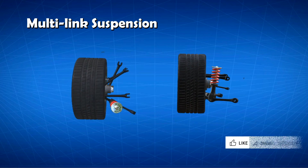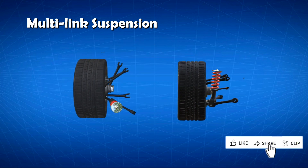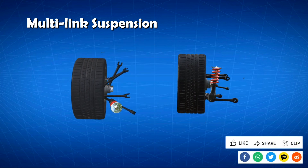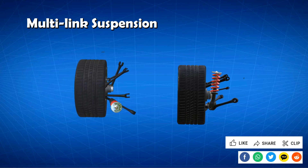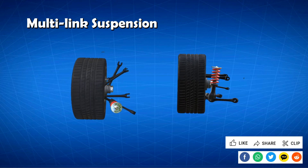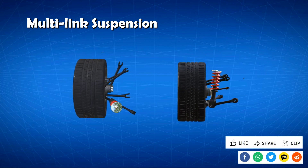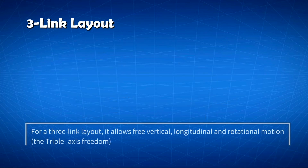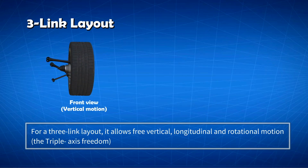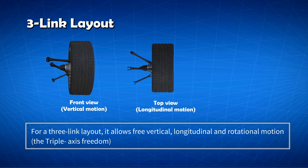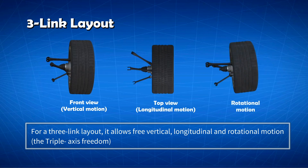As a result, they respond to loads along the arm's length in compression and tension, but without bending. For a three-link layout, it allows free vertical, longitudinal and rotational motion — what we call triple-axis freedom.